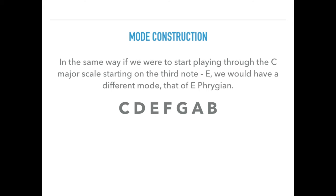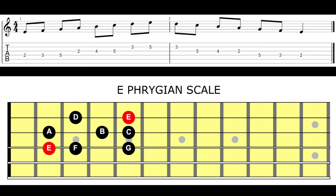In the same way, if we were to start playing through the C major scale starting on the third note, E, we would have another different mode — that of E Phrygian. And that will contain the notes E, F, G, A, B, C, and D.